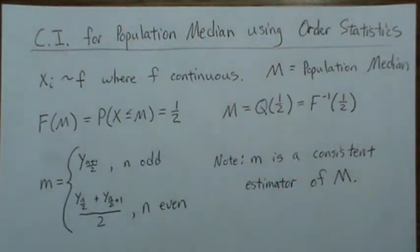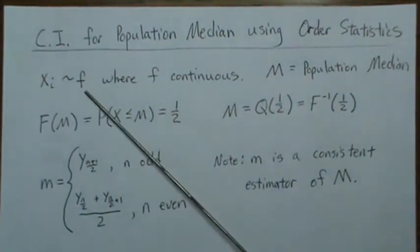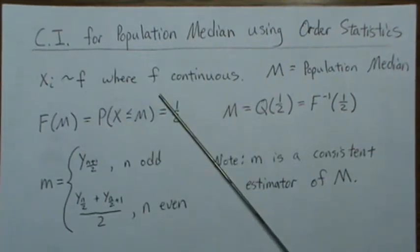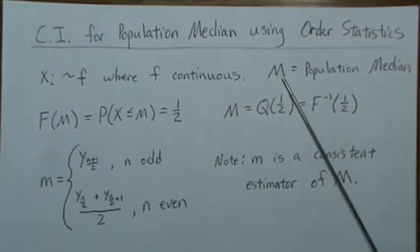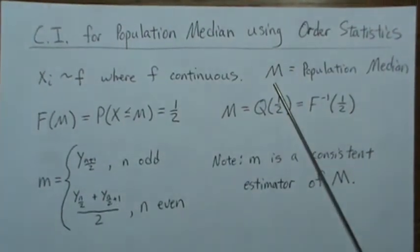In this video we're going to derive a confidence interval for the population median using order statistics. So a little background, our data follows some distribution F where F is continuous. We're going to let capital M be the population median and that's what we want to develop the confidence interval for.